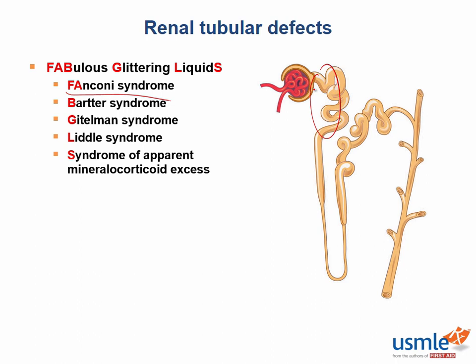If the proximal convoluted tubule doesn't reabsorb any solutes, that would mean glucose, amino acids, as well as bicarb are lost in the urine. Loss of bicarb leads to a metabolic acidosis. Since Fanconi syndrome is proximal in the PCT, it causes an acidosis, also referred to as a proximal renal tubular acidosis.